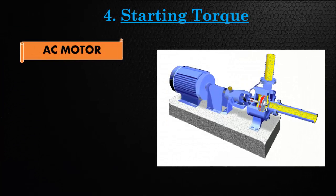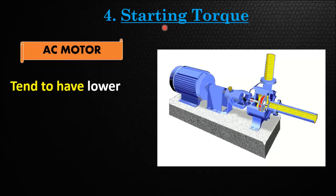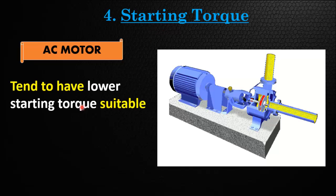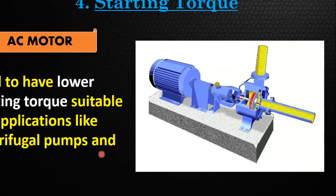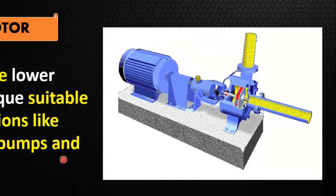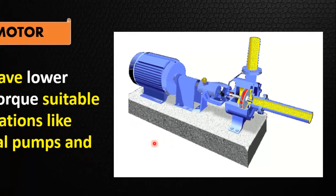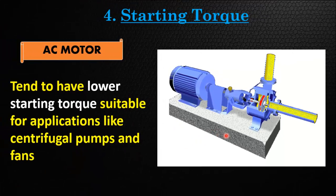The next difference is very important, which is based on starting torque. AC motors tend to have lower starting torque compared to DC motors and are found in a wide range of applications, including household appliances, industrial machinery, and HVAC systems.